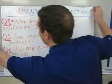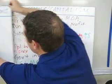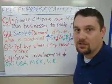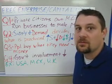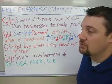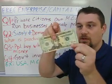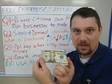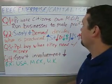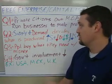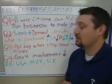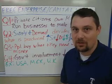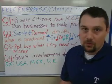Now let's look at the three main systems we're studying. First, we have free enterprise or capitalism. That is the system we use in the United States — free enterprise and capitalism mean the same thing. To symbolize that, I have a dollar — a nice $20 bill — because free enterprise capitalism is all about making that paper. The answer to question one: private citizens own the means of production. They run their businesses to make a profit, so the motive for opening a business is to make money, plain and simple.